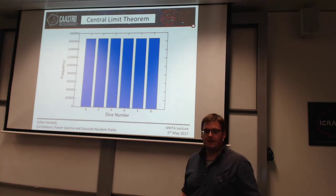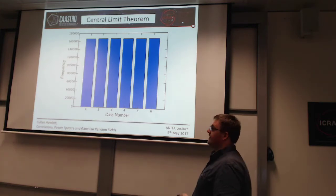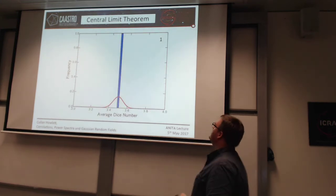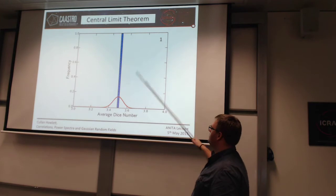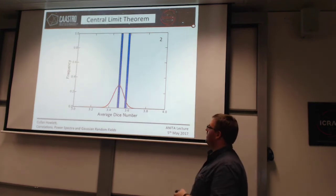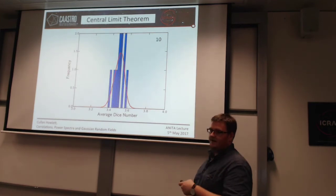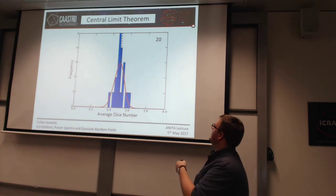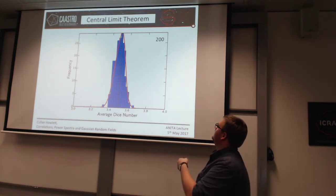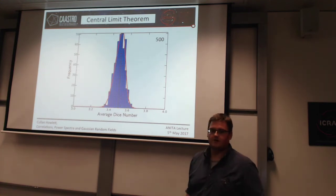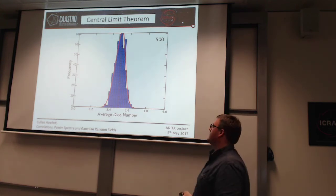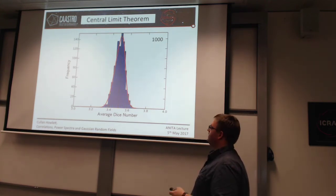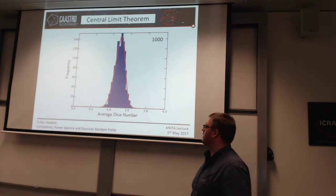But if I split this up into a thousand sets of rolls — so a thousand times a thousand rolls — and take the average, then starting from just one set of thousands I get some average dice number. But eventually, almost by magic, this distribution will start to look like a Gaussian. Once I've averaged over 500 sets of a thousand rolls, the distribution of those averages looks like a Gaussian. This is the central limit theorem in action.